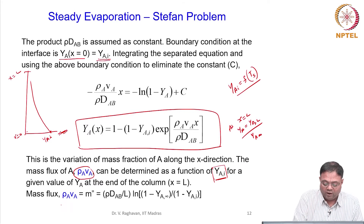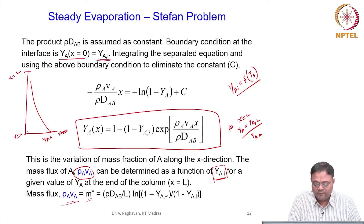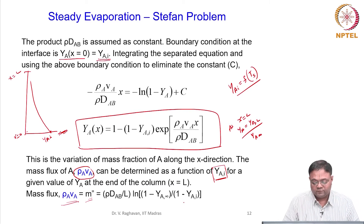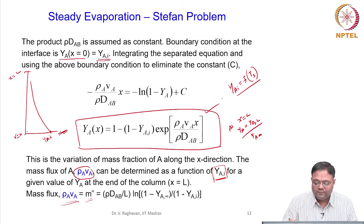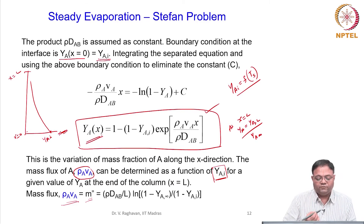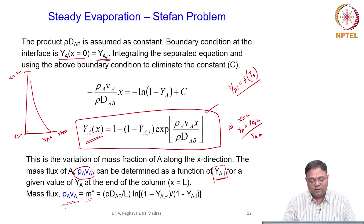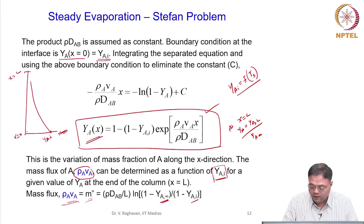Applying that boundary condition, the mass flux M-dot-double-dash = rho_A * V_A equals (rho * D_AB / L) * ln[(1 − Y_A_infinity)/(1 − Y_AI)]. This is the mass flux of species A. By this analysis we get the profile of mass fraction of A in the tube. Y_B = 1 − Y_A since there are only two binary species.